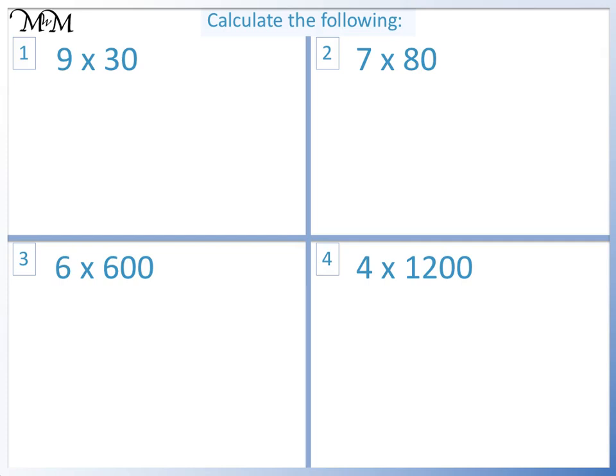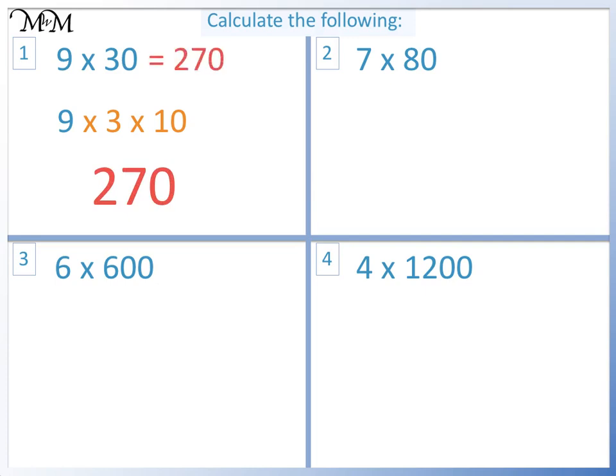Here are some questions for you to try. Pause the video now and have a go. Question 1: 9 times 30. This is the same as 9 times 3 times 10. 9 times 3 equals 27, times 10 equals 270. So 9 times 30 equals 270.